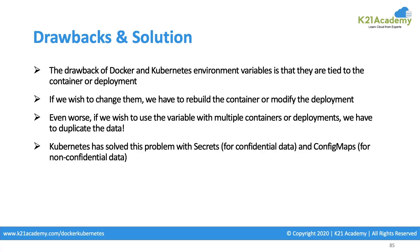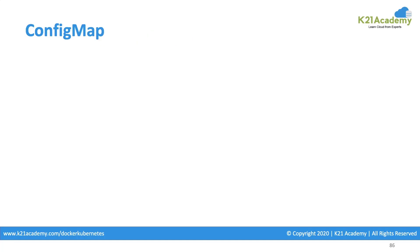There are two terminologies: config map and secrets. Kubernetes uses these two kinds to solve these problems. Secrets are used for confidential data where we encrypt the values supplied to our containers and applications. Config map is for non-confidential data — any configuration parameters like an nginx.conf or any type of configuration you want to pass.